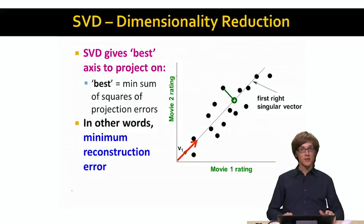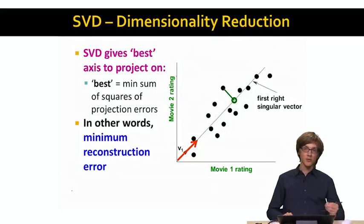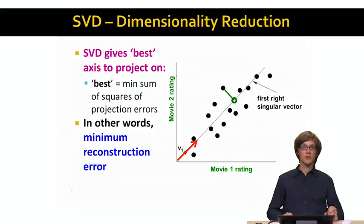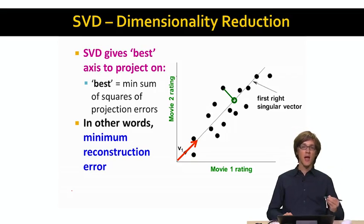So what I want to do now is actually talk about how we do dimensionality reduction — how we discover that our movie data really had only two strong concepts, and the third concept was more like noise and it was okay to remove it from our analysis. The question is: what is SVD really doing and how do we think about it in terms of dimensionality reduction? What SVD is really trying to do is give us the best axis to project on.